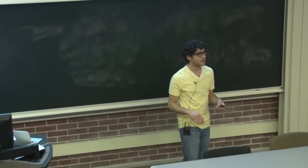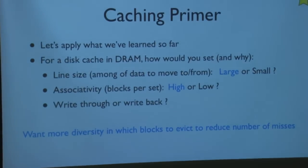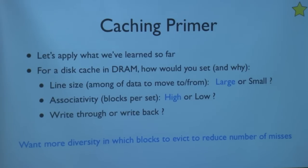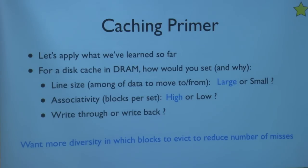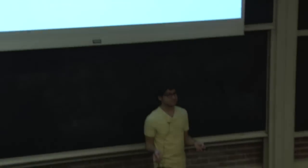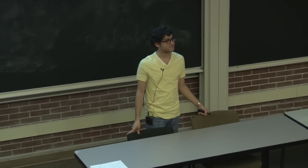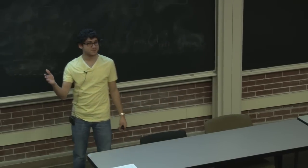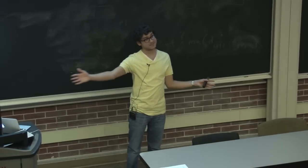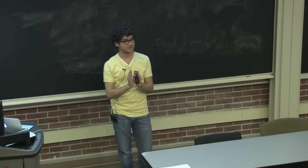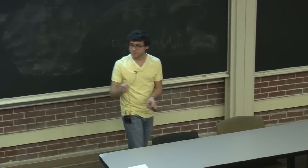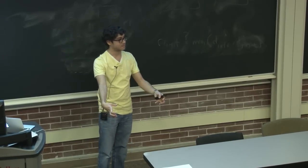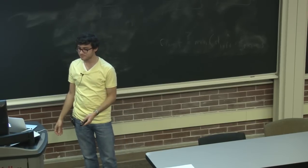What about write-through versus write-back? Disks take a long time to spin up to where they need to locate data — they're good for large amounts of data but not for tiny amounts. So maybe we actually want to coalesce a lot of those writes in DRAM and then write them back in a big bulk operation to disk. That might be something we want to do in virtual memory.